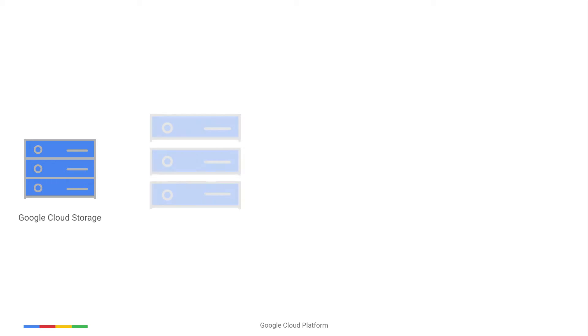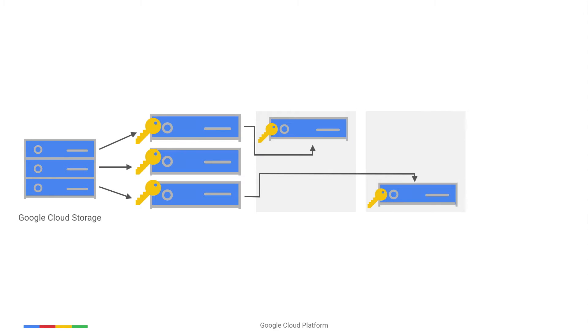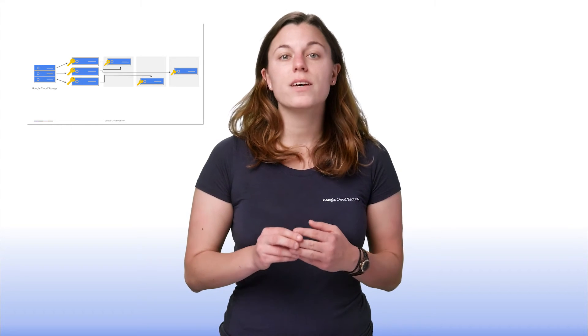To understand how storage layer encryption at Google works, you need to understand how Google stores your data. For example, when you upload a cat video to Google, it's broken into subfile chunks for storage and distributed across Google storage systems. Each chunk of data is encrypted with an individual encryption key so that no two chunks of data will have the same encryption key, even if they're part of the same Google Cloud storage object, owned by the same customer, or stored on the same machine. This gives us super low-level cryptographic isolation of data.